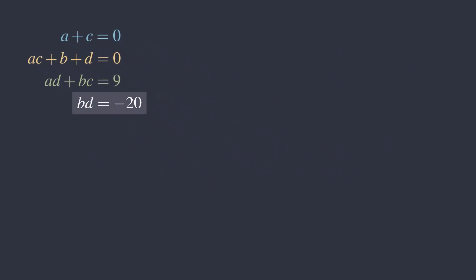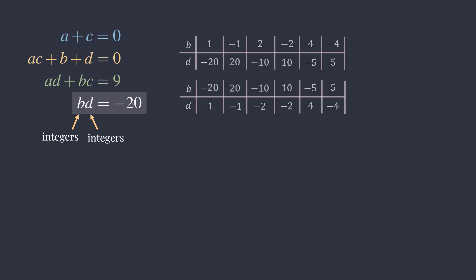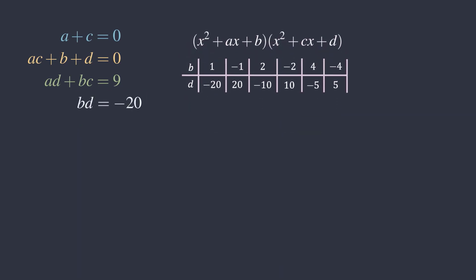Since b times d equals negative 20, and b and d are both integers, these are the possible values for b and d. Since the two quadratics are generic expressions, we only need to consider these possibilities.